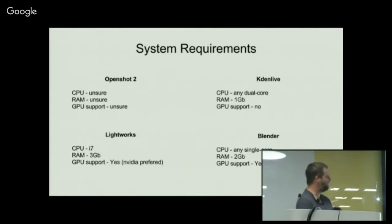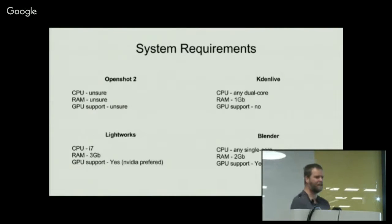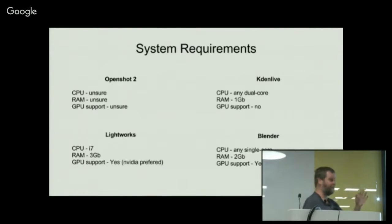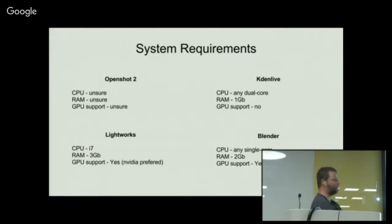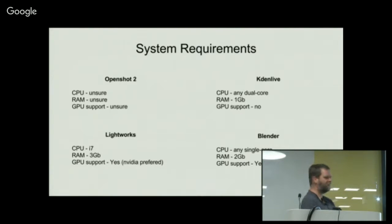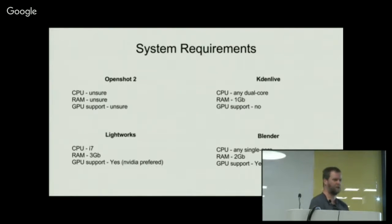On system requirements, there seems to be a lot of difference online. OpenShot 2 doesn't have documented system requirements yet — it's only been out of beta for about three months. Kdenlive and Blender mention quite light requirements. Lightworks is the only one that really beefs it up. The reality is all four could be used on a very basic old Pentium 4 machine, as long as you don't actually want to open a video on it.